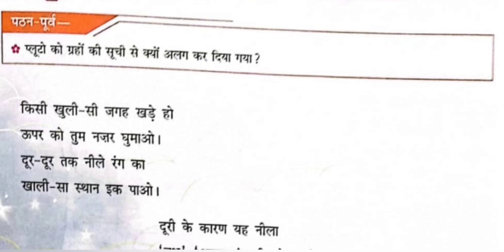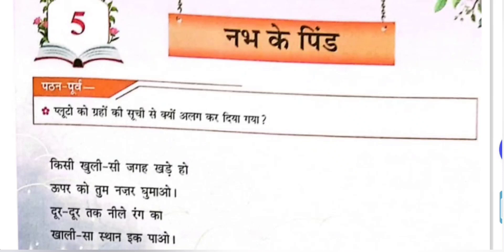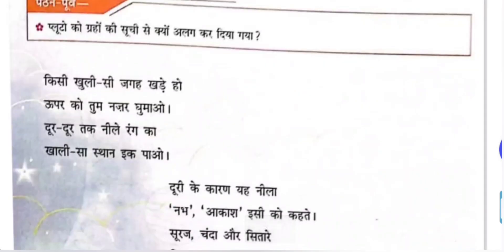The poet Gamandilal Agarwal has given details through this poem about the sky, the solar system, why the sky looks blue, what things are spread across the sky, what solid spheres are spread across the sky, how much time the sun's rays take to reach the Earth, the different planets in the solar system, and which planets have their own light and which do not. Now let's see the poem line by line.